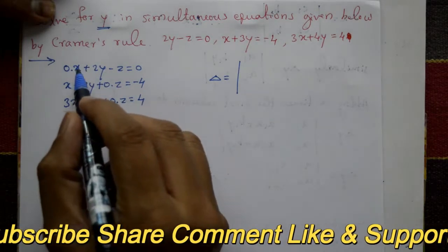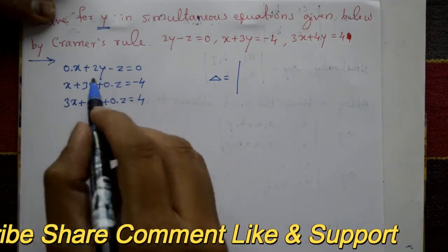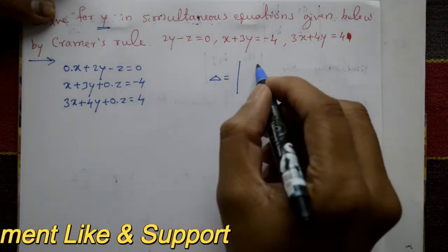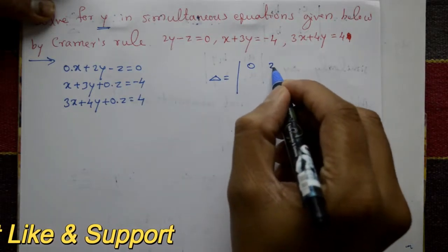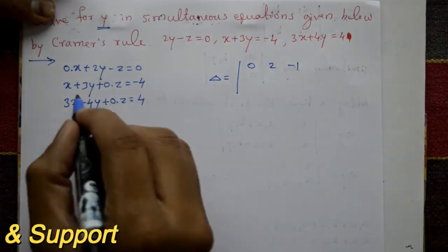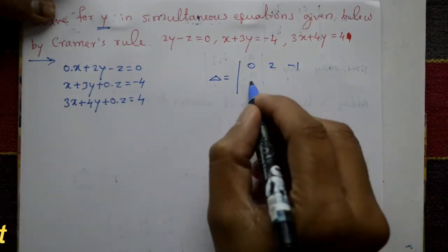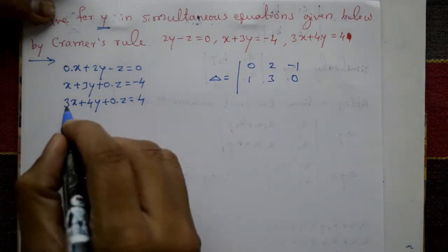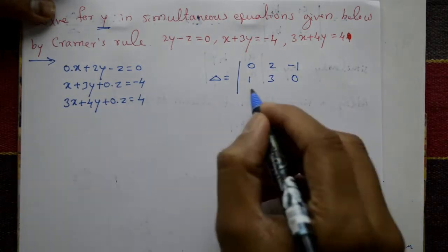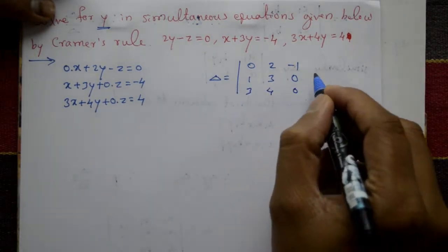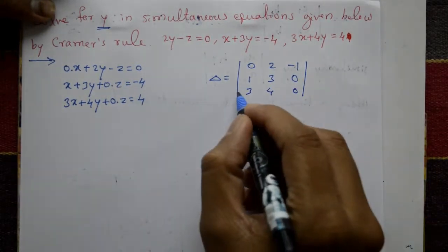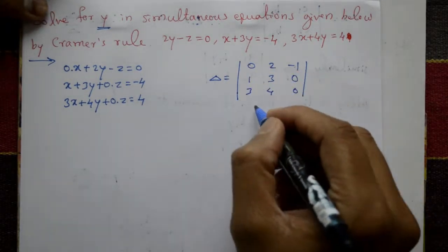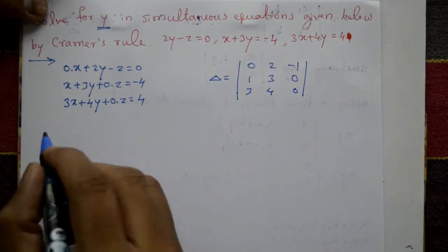Now write delta by taking the determinant of the coefficients of x, y, z for all three equations. The matrix is: first row 0, 2, minus 1; second row 1, 3, 0; third row 3, 4, 0. This is delta.